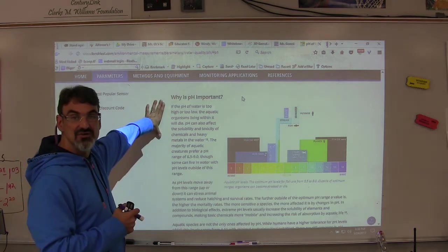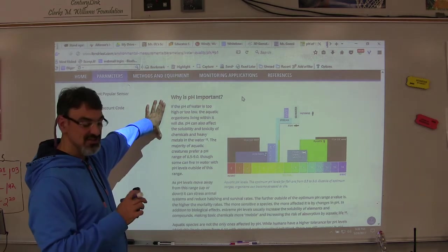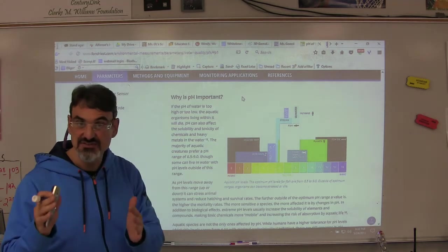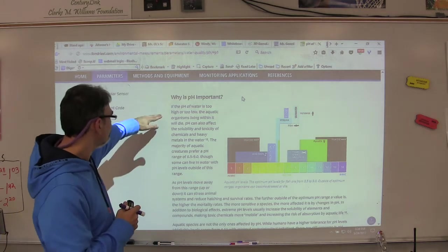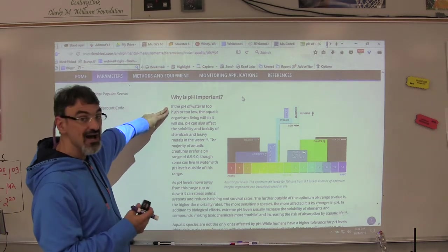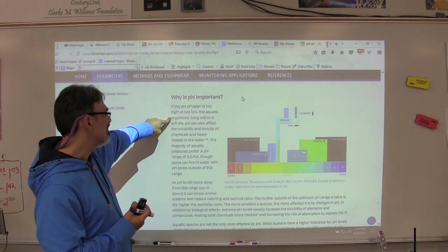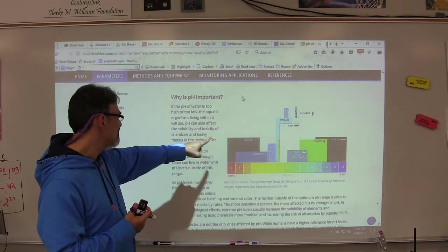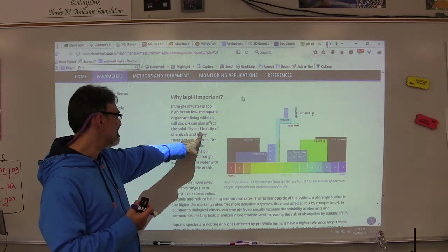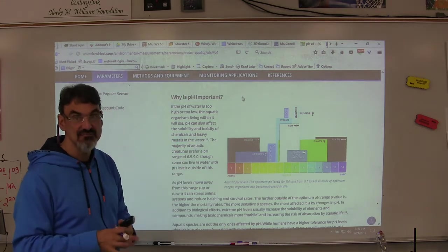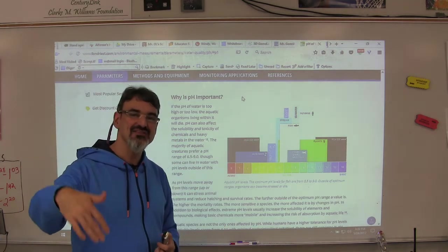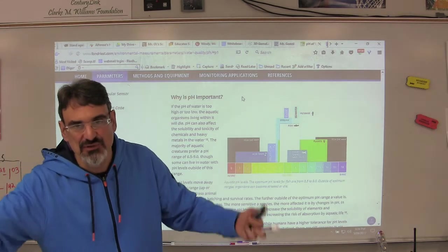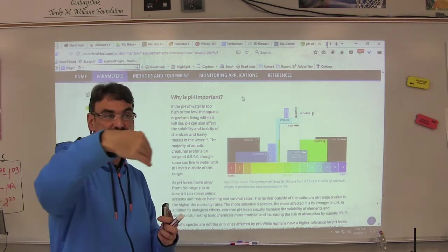Now we get to the part of why is pH important. This is a good section for you to read too. If the pH of water is too high or too low, the aquatic organisms living within it will die. pH can also affect the solubility and toxicity of chemicals and heavy metals in water. If you add those pollutants, things that pollute water, into water that's already got a high pH or low pH, it's even worse.